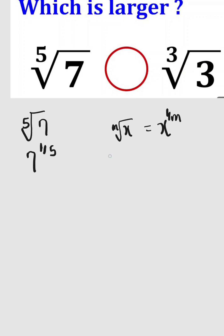The same thing is going to be done to the next one, which is the cube root of 3. So here we have 3 to the power of 1 over 3.